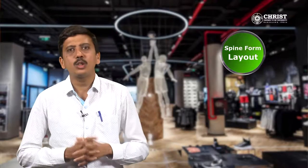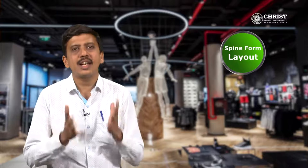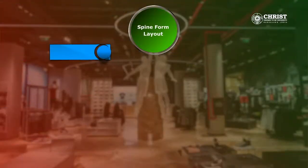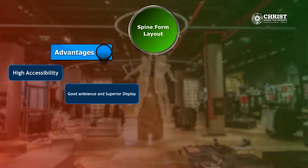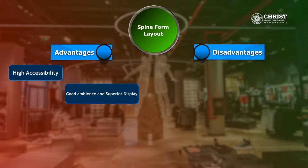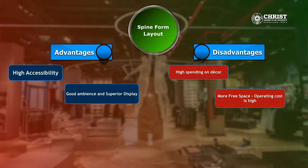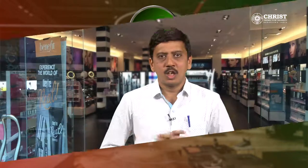Now let us discuss about the advantages and disadvantages of a spine form layout. The advantages of a spine form layout are high accessibility, good ambience and superior display. The disadvantages of a spine form layout are high spending on décor and more free space leads to high operating cost.